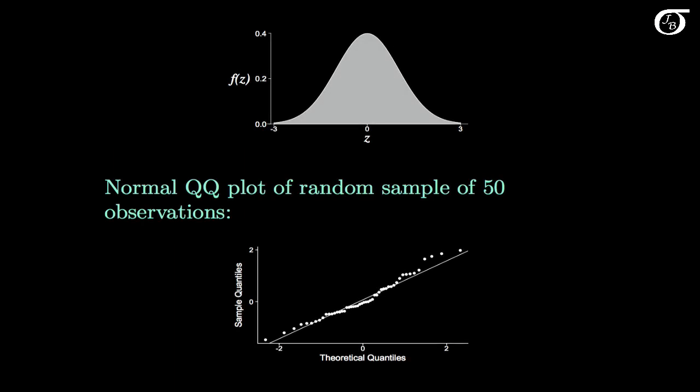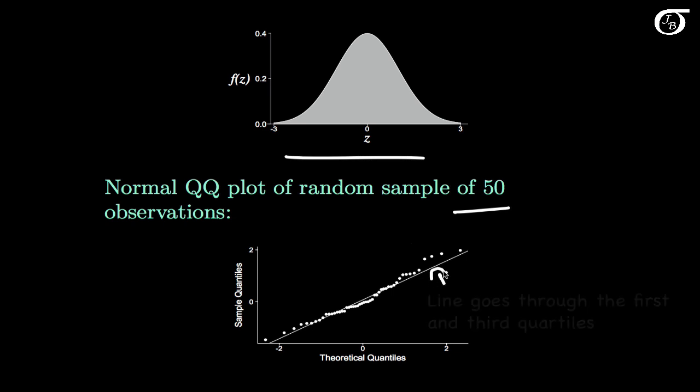Now let's look at a few things we might see in practice. Usually we use statistical software to do the plotting — here I'm using R. R's method differs slightly from what I described, but the overall idea is the same. In this first plot I'm sampling 50 observations from a normally distributed population, and we get a normal quantile-quantile plot that results in a pretty darn straight line. R draws in a line joining the first and third quartiles for perspective. Overall our points form a pretty straight line, which shouldn't be surprising since we are indeed sampling from a normally distributed population.